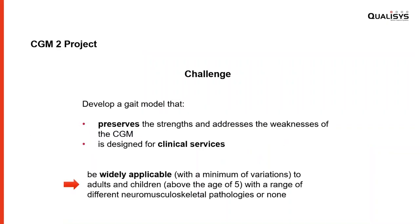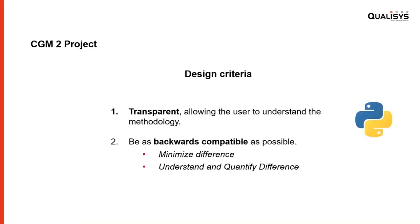So the goal of this project was to develop an evolution of the CGM that preserves its strengths and addresses its weaknesses. The CGM2 must be designed for clinical service and applicable to adults and children with a range of neuromusculoskeletal pathologies. From a technical point of view, the design criteria are to make the model transparent — allowing users to understand the methodology — and to make the model backward compatible, minimizing differences and quantifying where differences cannot be eliminated.